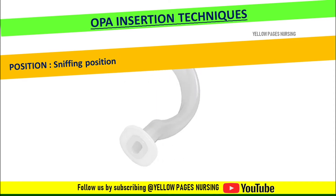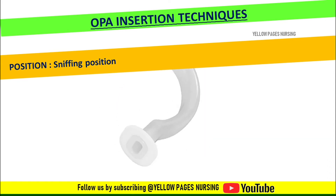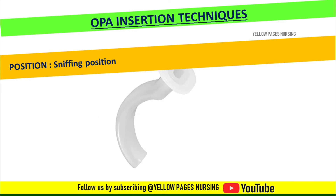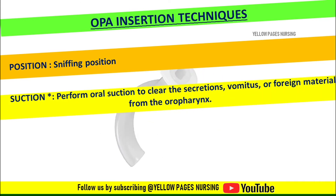Follow universal precautions and perform hand hygiene; wear appropriate PPE. First, positioning — use the sniffing position, which can be achieved in most patients with a pillow and chin lift. In trauma patients, apply the jaw thrust and not the chin lift maneuver. If indicated, perform oral suction to clear secretions, vomitus, or foreign material from the oropharynx.